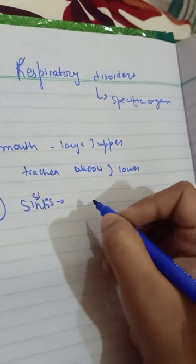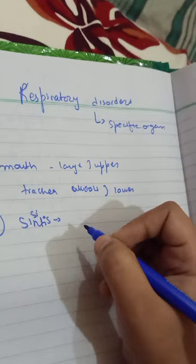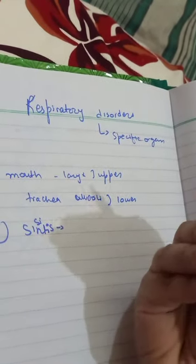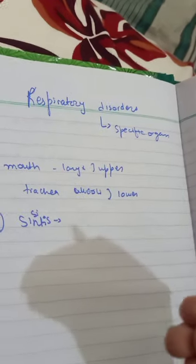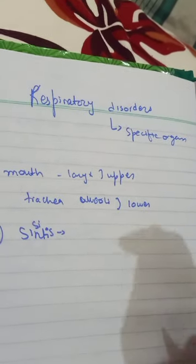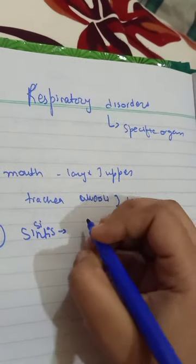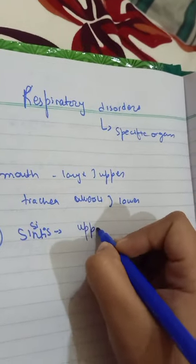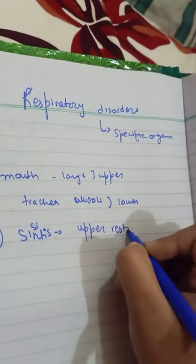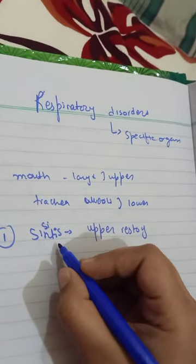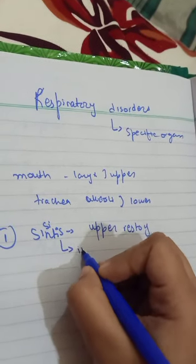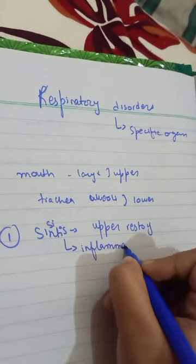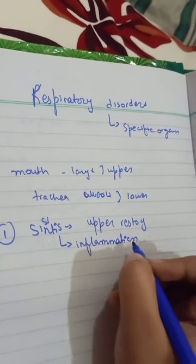Sinusitis — as discussed in the previous video — involves the hollow airspace cavities which are in paired form, and they infect the upper respiratory tract. Sinusitis is the inflammation or blockage of the sinuses.